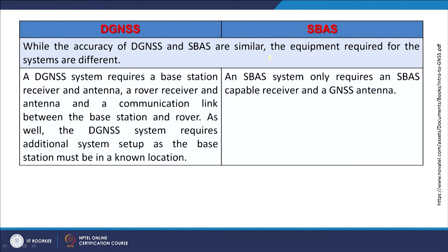Comparing DGNSS and SBAS: the accuracy is almost similar, though SBAS provides somewhat better accuracy than DGNSS. The equipment required is different — DGNSS requires a base station, antenna and rover stations, whereas SBAS only requires a SBAS-capable receiver. A single dual-frequency receiver can give higher accuracy of a few centimeters, and DGNSS can also provide accuracy to that extent.